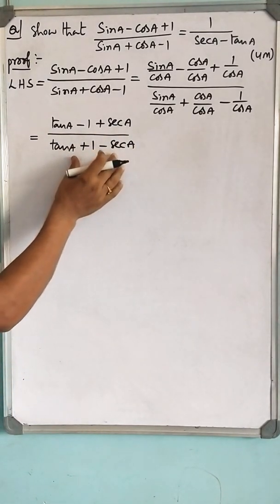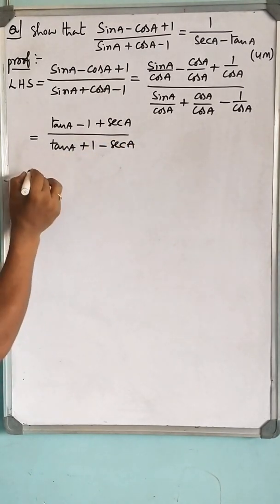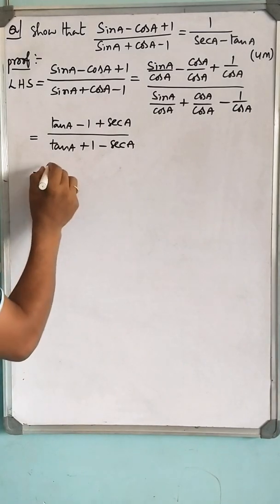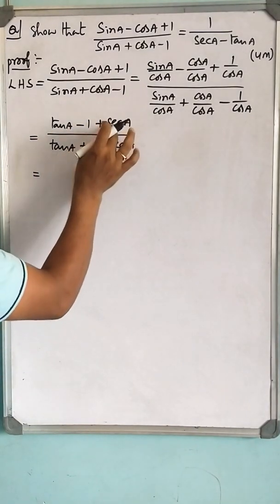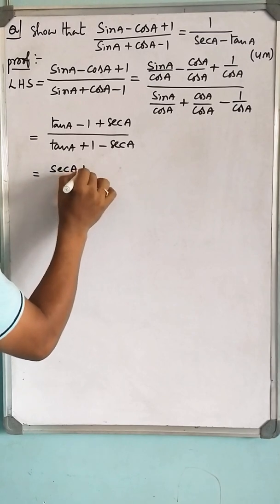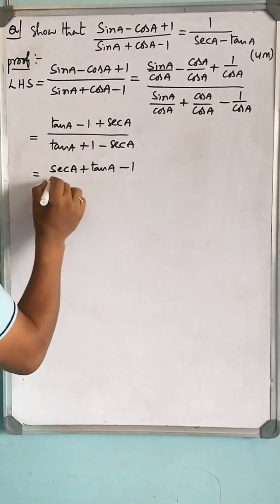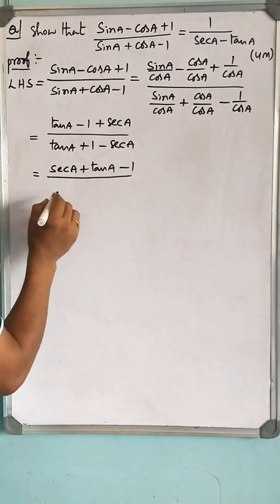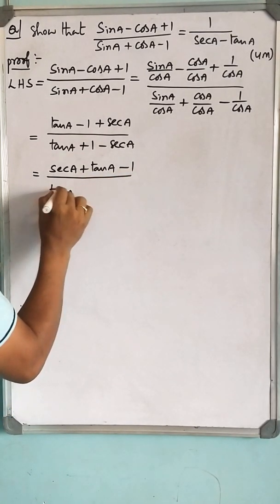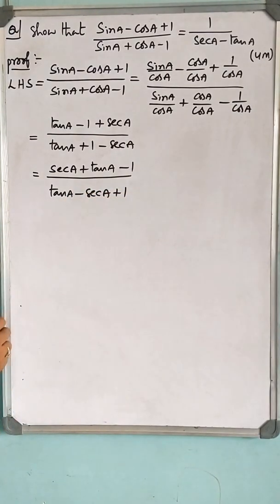From this step onwards you can move in two ways. I would like to go the simplest way. Let us rewrite this as: write secant A first — (sec A + tan A - 1) / (tan A - sec A + 1).